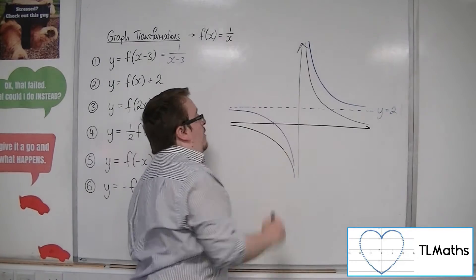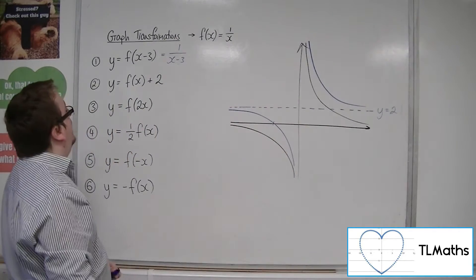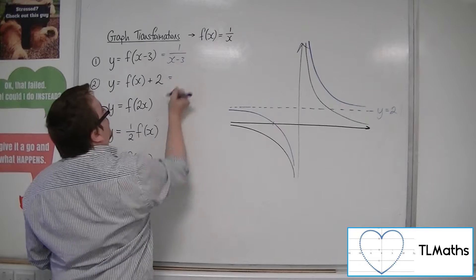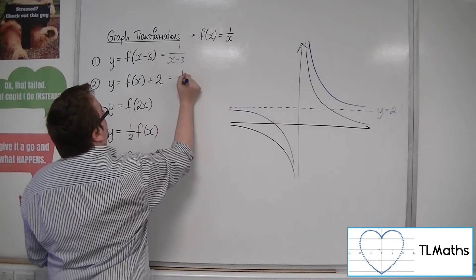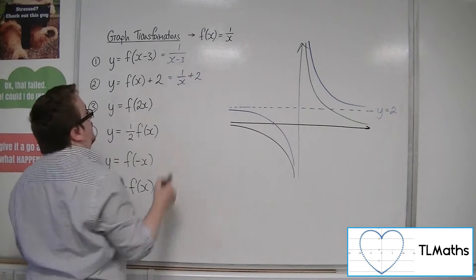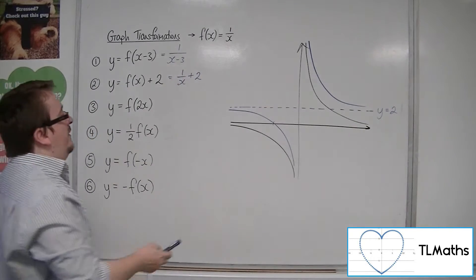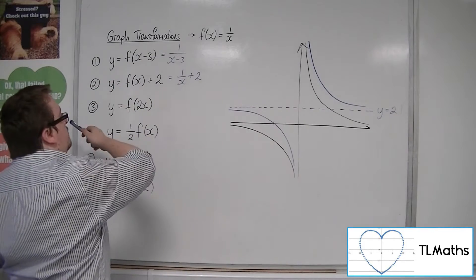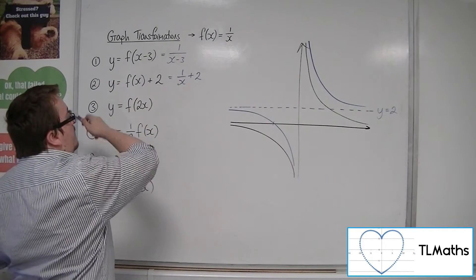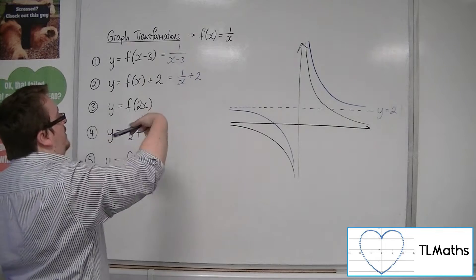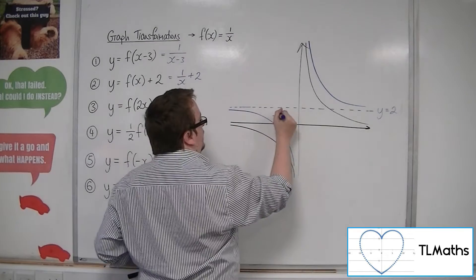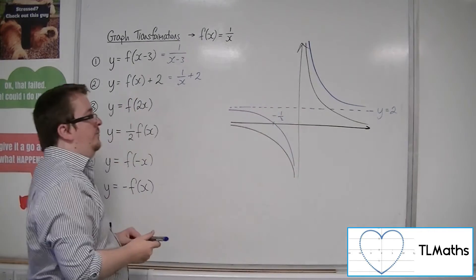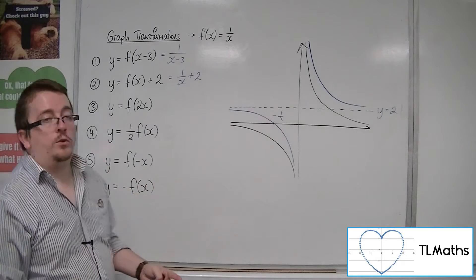And, of course, we could work out where it's crossing the x-axis there. Now, this would be f of x plus 2. Now, this is where y is 0. So, if you have 0, we can take 2 from both sides, and then reciprocal both sides so that it would be minus 1 half. And that's what the new curve will look like.